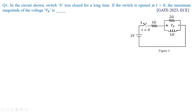You can see here the circuit — you have a switch S, it was closed for a long time and at t equal to zero it got opened. We need to find out what is the developed voltage of the resistor under maximum condition.